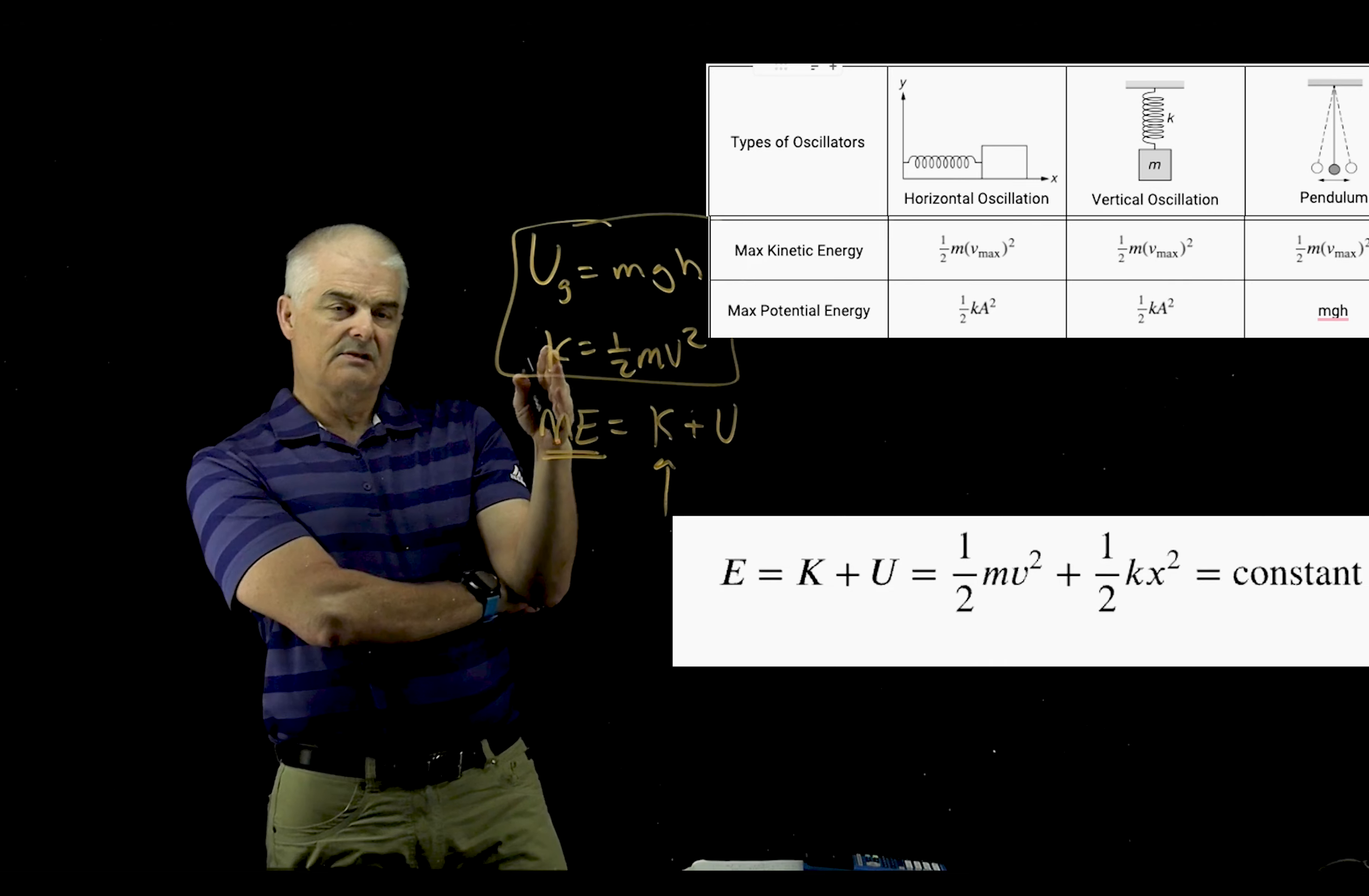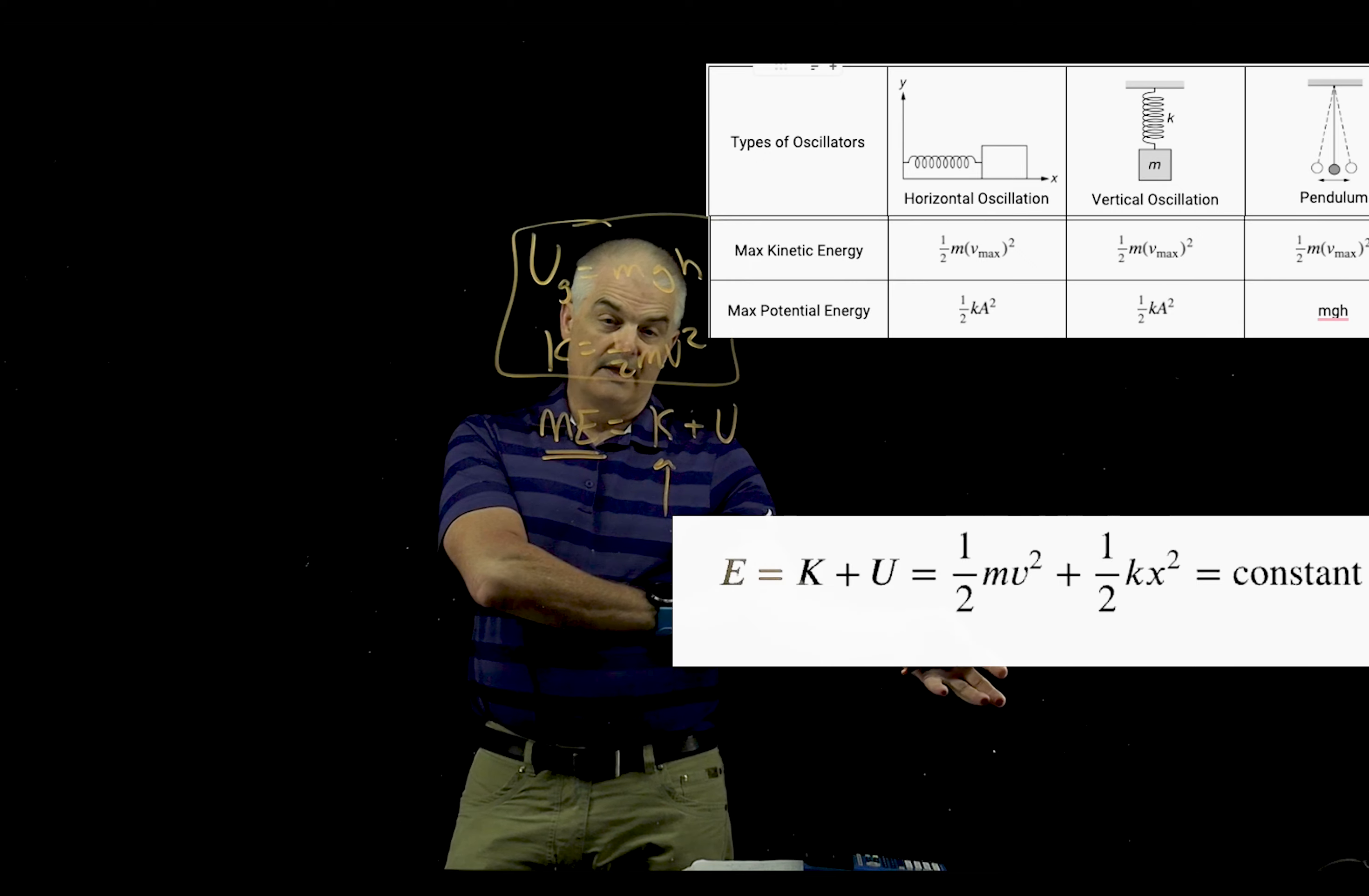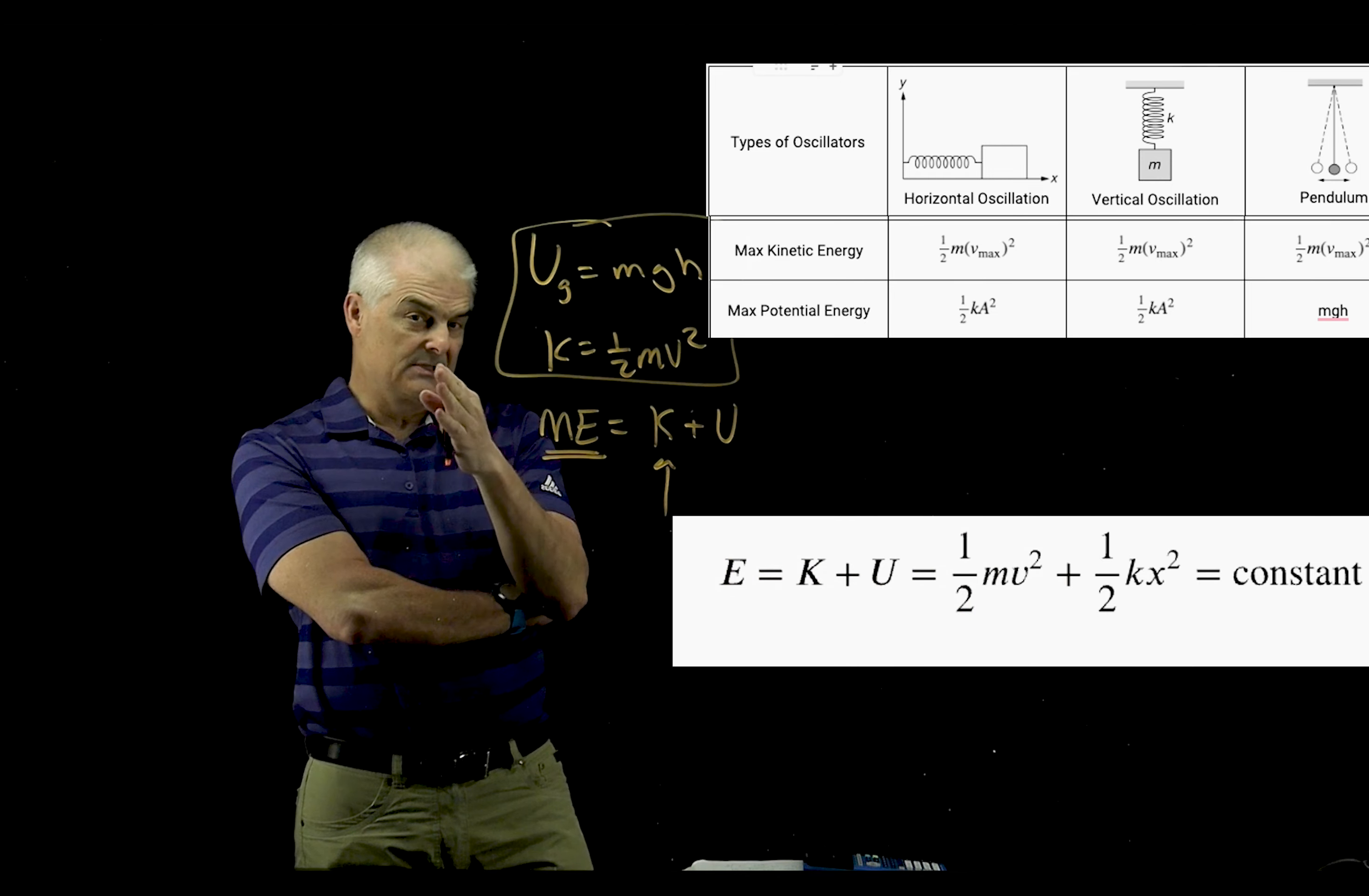You've got this equation at the bottom: the total energy or mechanical energy is equal to k plus u, which is one half mv squared plus one half. Oftentimes we say kx squared, where our kx tends to be the amplitude of the motion, at least in the first two instances.